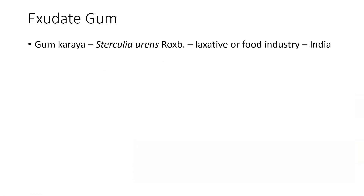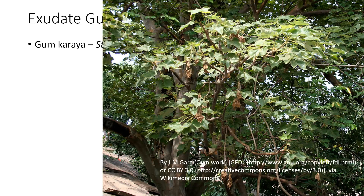Gum karaya is another exuded gum, coming from Sterculia urens. It can be used as a laxative and in the food industry. One notable application is as the adhesive used to hold colostomy bags in place — it is found in powdered form, mixed with water to make it tacky or sticky. It is hypoallergenic. It is harvested by scratching the outside of the tree, which then produces the gum for collection.